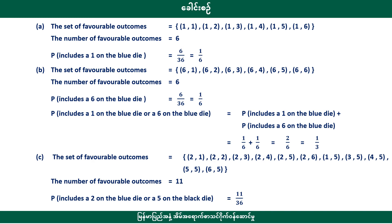Let's take a look. We can see the outcomes for the blue die. The probability for each face of the blue die is 1 by 6.